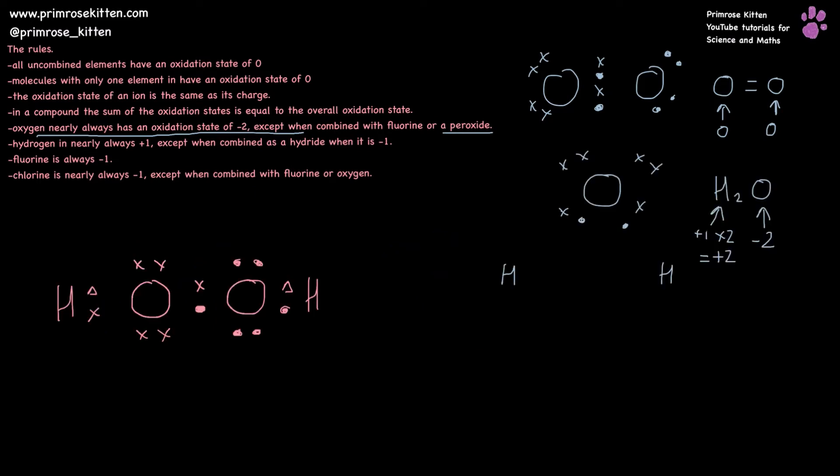And in a peroxide, the electrons in the middle that oxygen is sharing with each other, neither oxygen has more of a pull than the other one over it, so they are truly sharing them. So we can't say it has gained an electron, we can't say it has lost an electron.